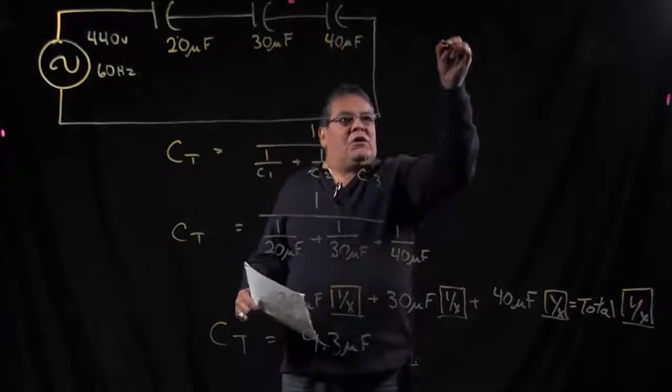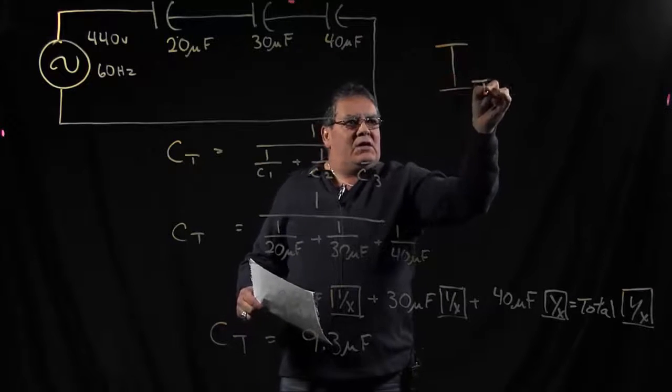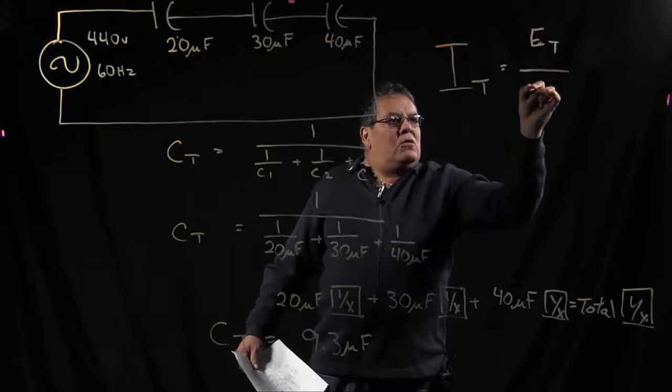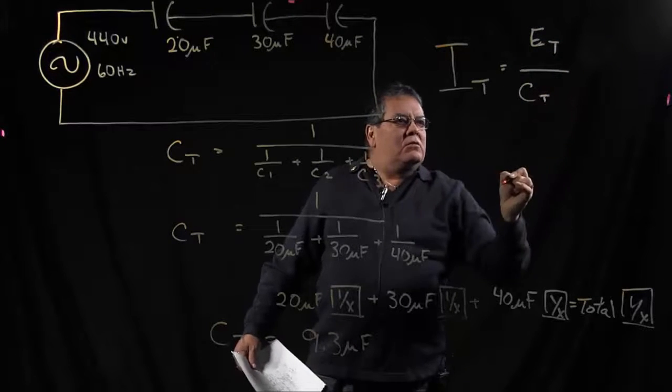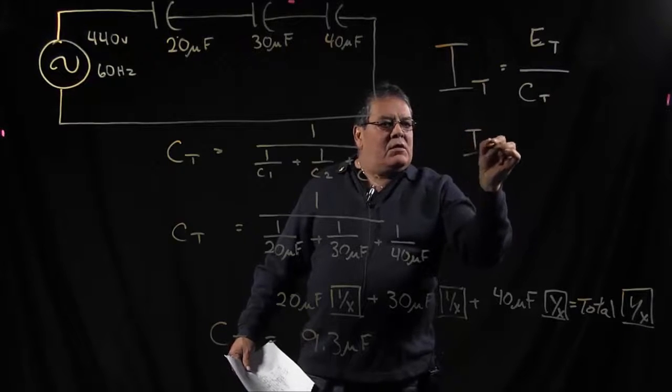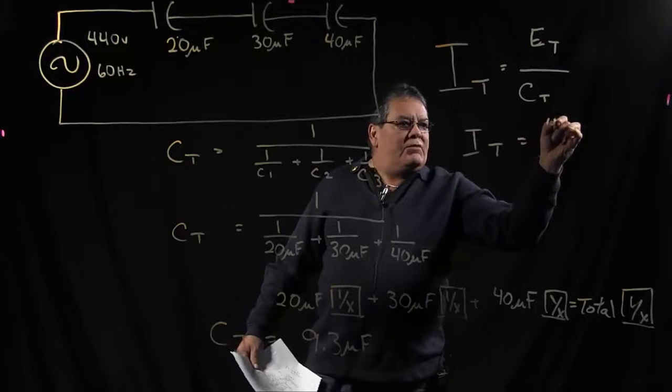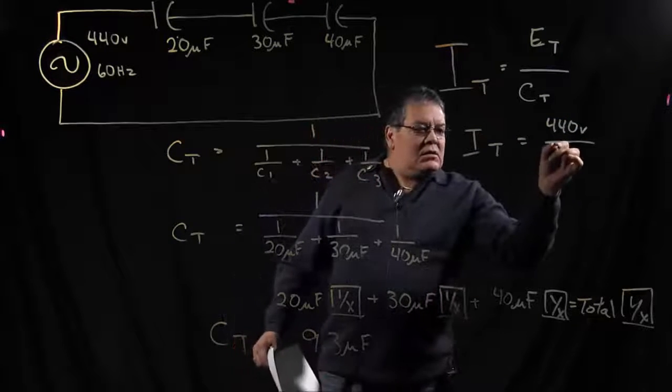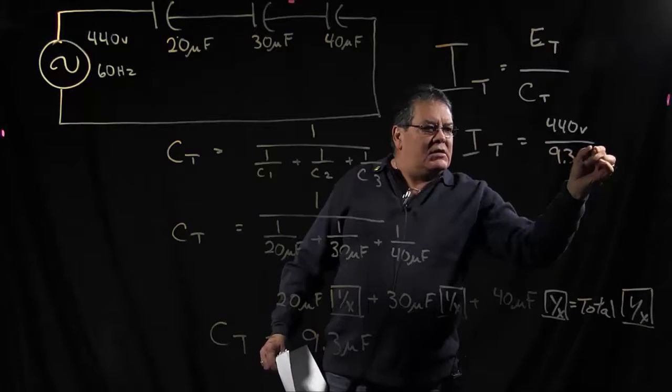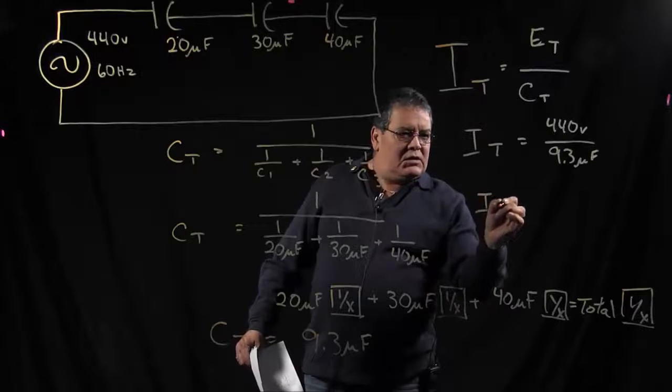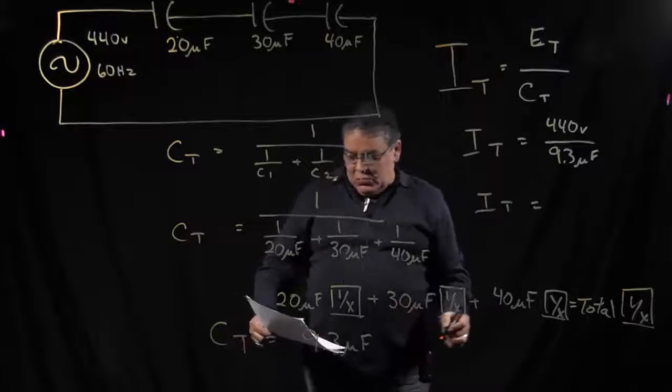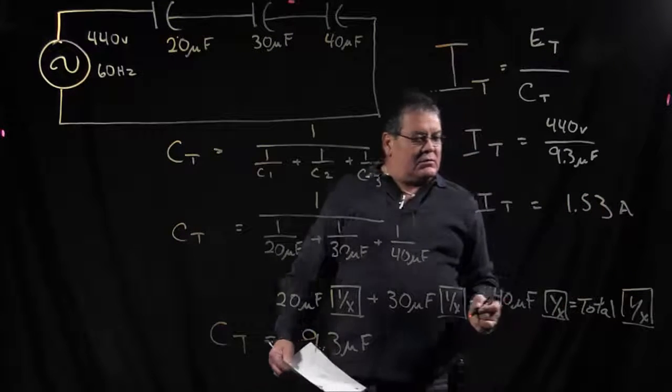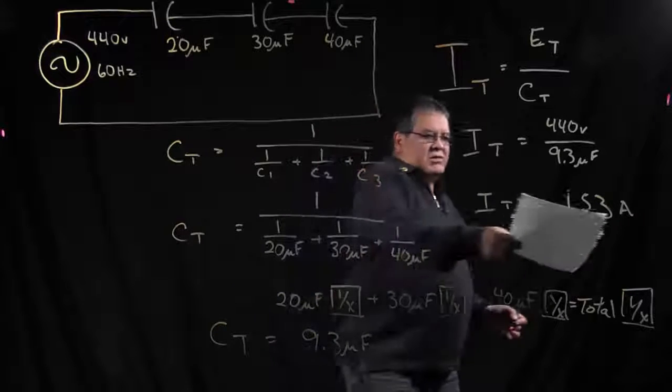Now for your total current, you're going to go back to your Ohm's Law once again, which is going to be your total voltage over your capacitance total. Here again, we have our total voltage of 440 volts. Our total capacitance is 9.3 microfarads. So our total current is equal to 1.53 amps. Remember, current is always measured in amps.